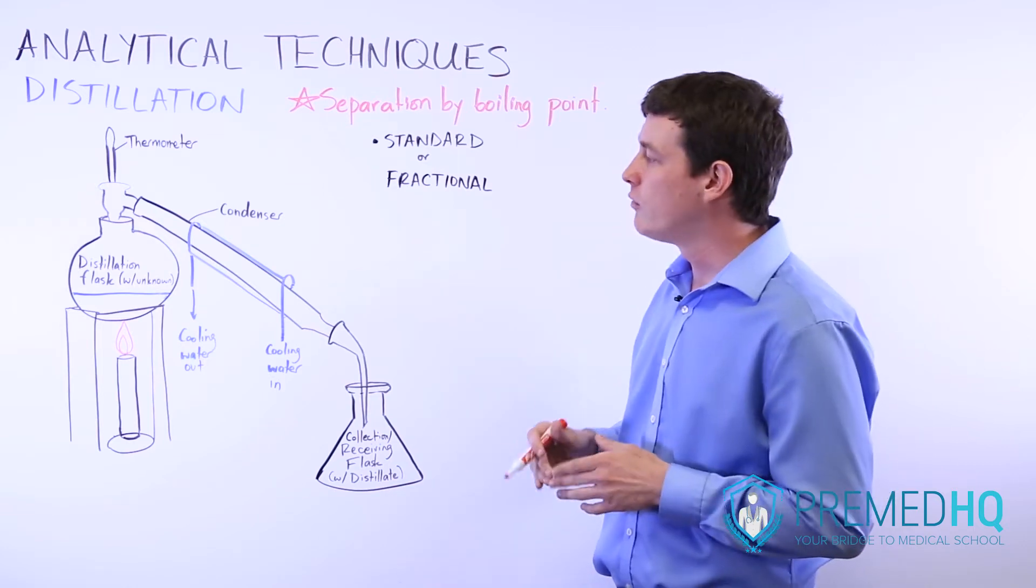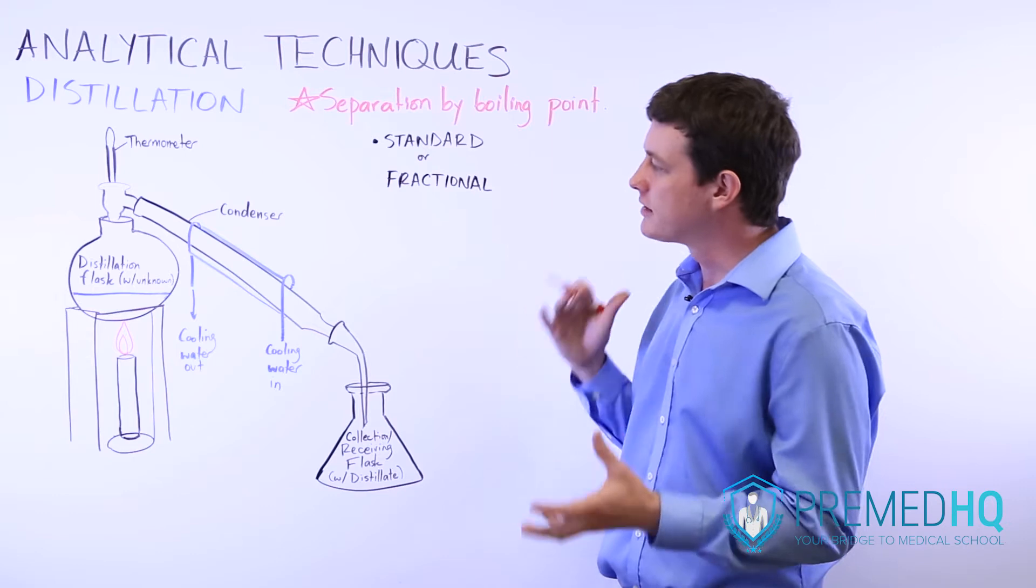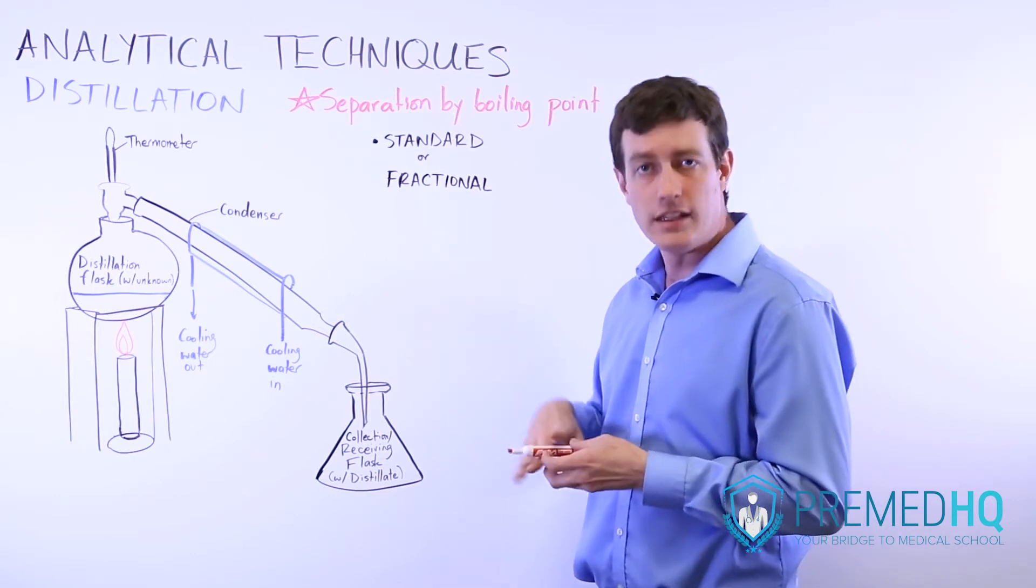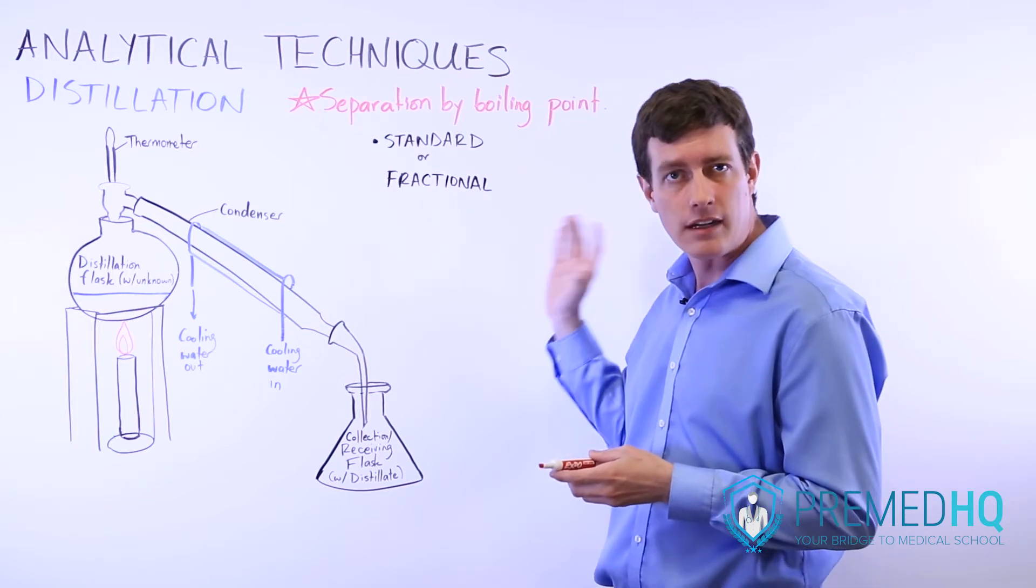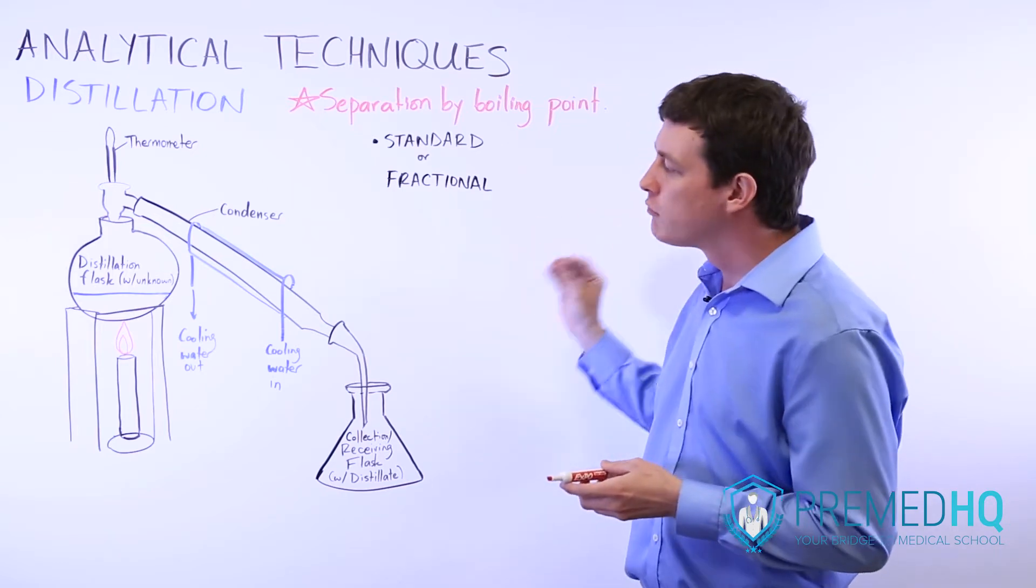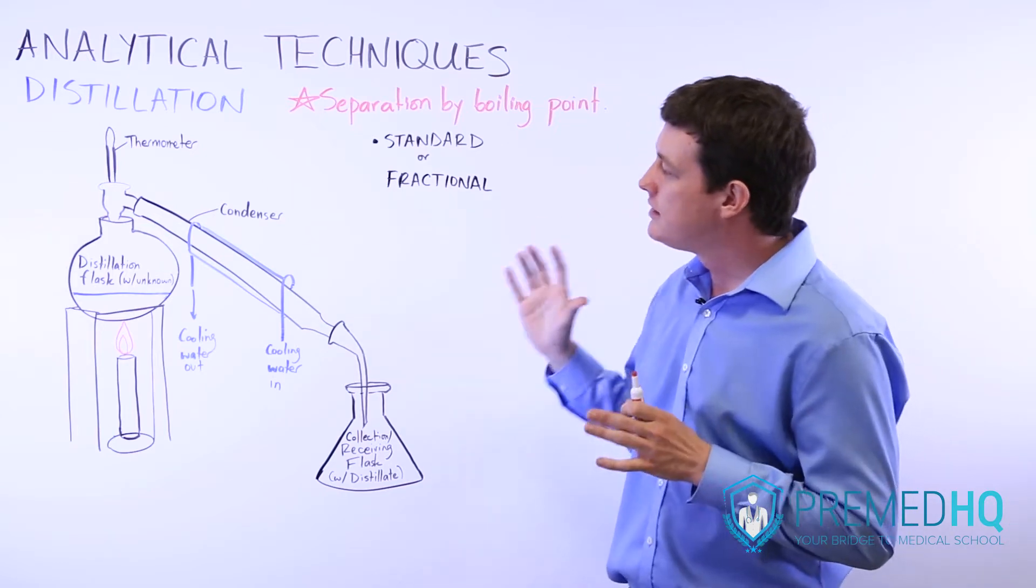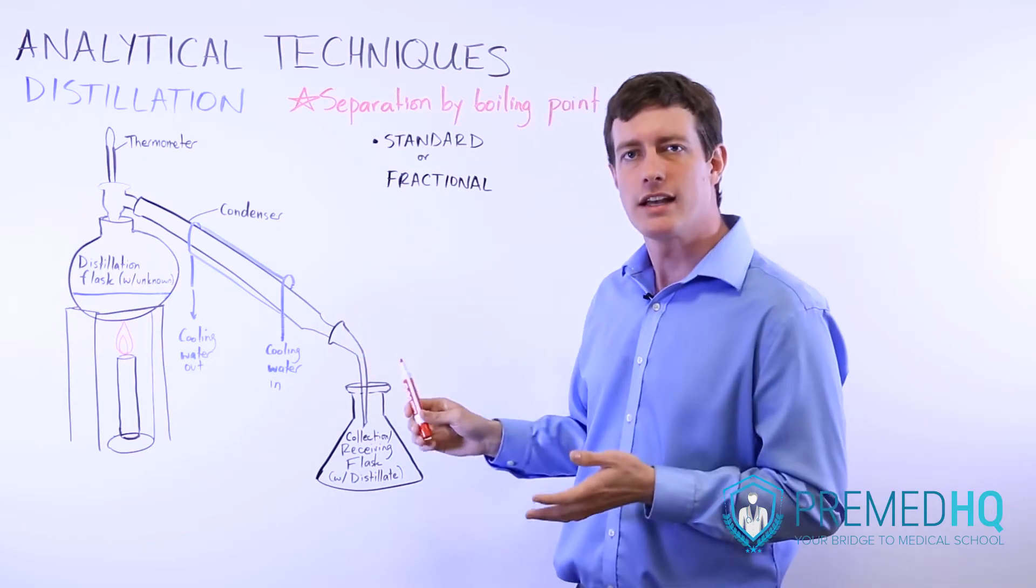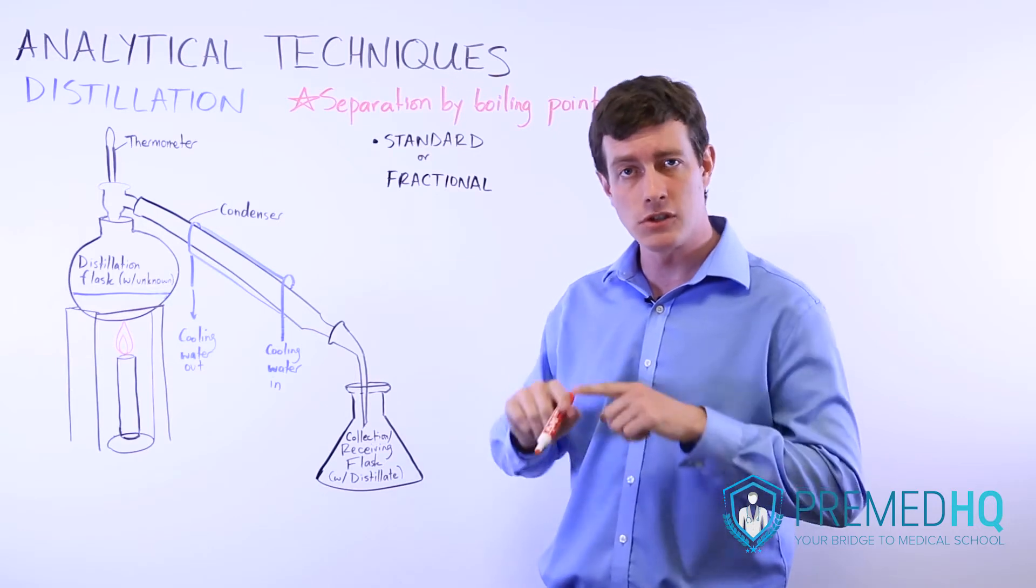When you're trying to assess the boiling points of different compounds and functional groups, what you're really looking for is the different factors that would produce more intermolecular bonds in that compound.